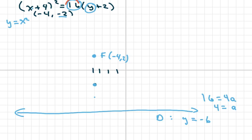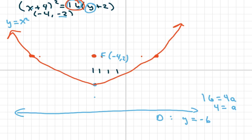The length of the latus rectum is 16, so from the focus I go eight units in each horizontal direction. Adding eight to negative four gives four, and subtracting eight from negative four gives negative twelve. So the latus rectum points are four comma two and negative twelve comma two.